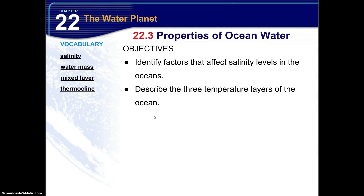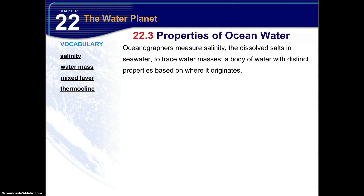Vocabulary terms include salinity, water mass, mixed layer, and thermocline — I'm going to touch on each one of those. Make sure you have those definitions prior to these notes. The objectives are to identify factors that affect salinity levels in the oceans, and then describe the three temperature layers of the oceans.